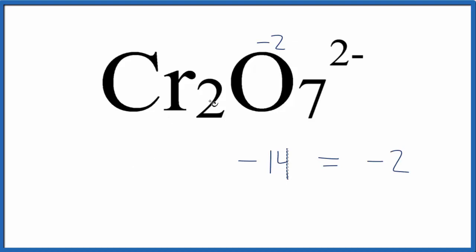At this point, when we look at our chromiums, we know that something plus minus 14 will give us the minus 2. We know that 12 plus minus 14 gives us minus 2.